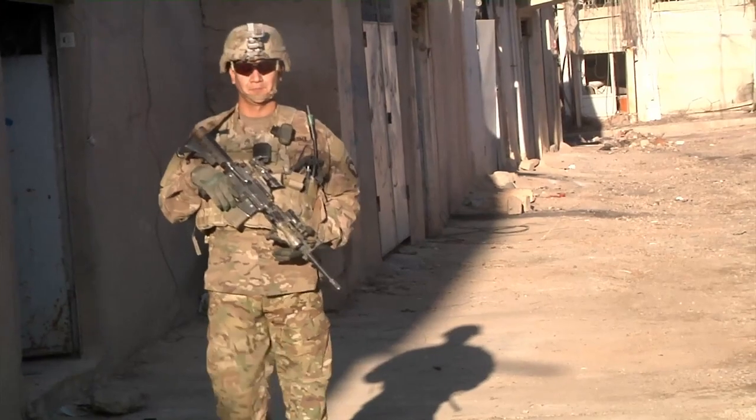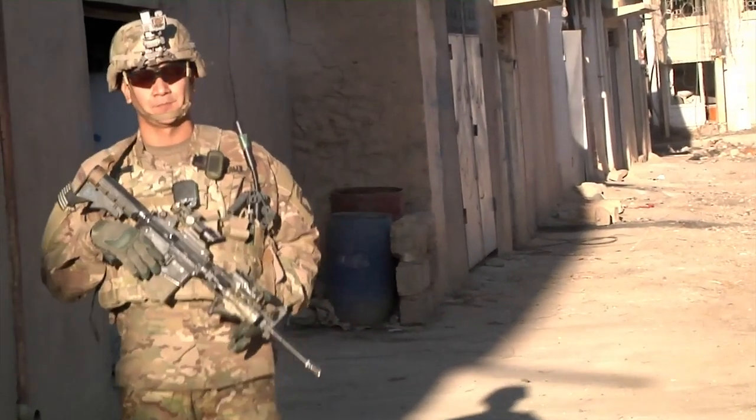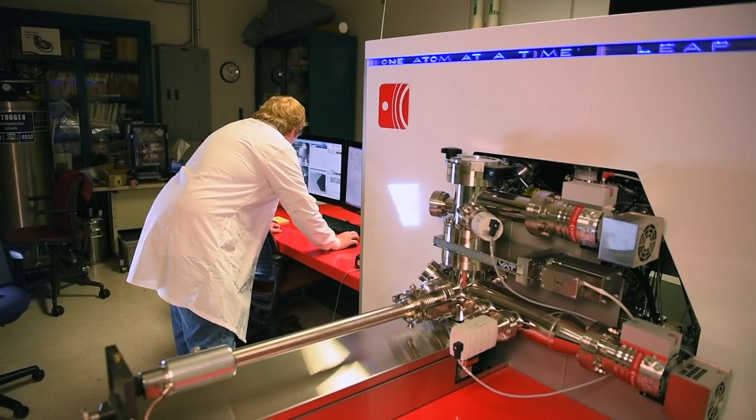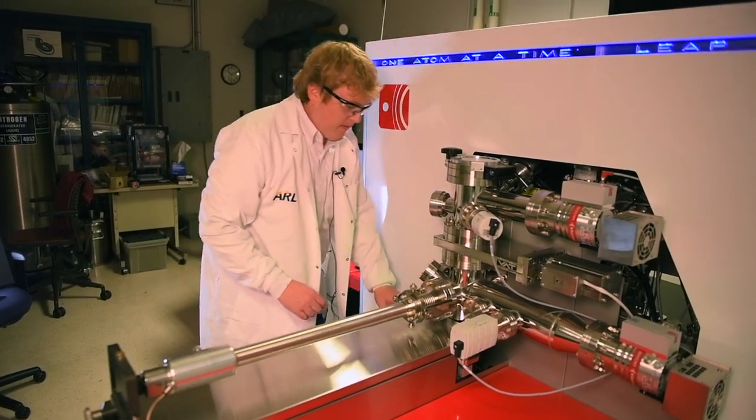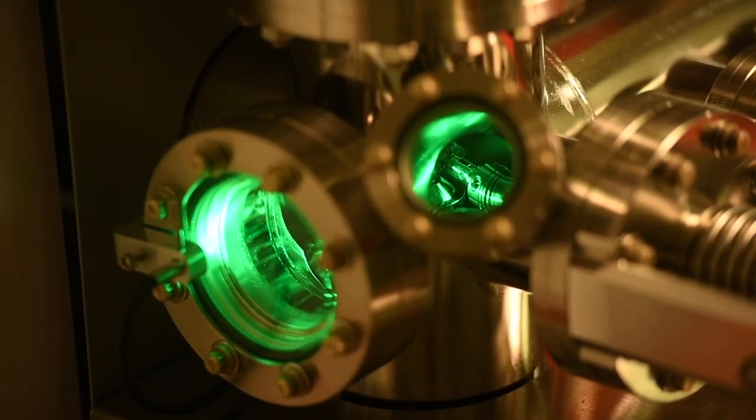What happens at the nano level can have a big impact on the effectiveness of body armor for future soldiers. At the U.S. Army Research Laboratory at Aberdeen Proving Ground, Maryland, material scientists use cutting-edge technology to peer into a world rarely seen.